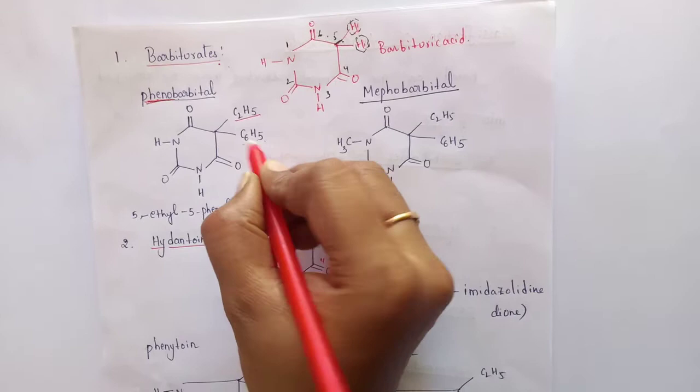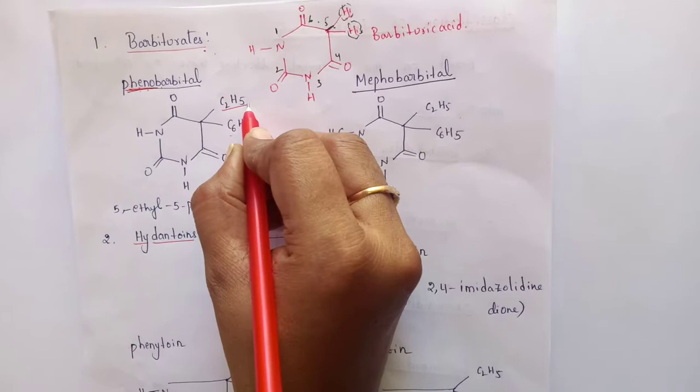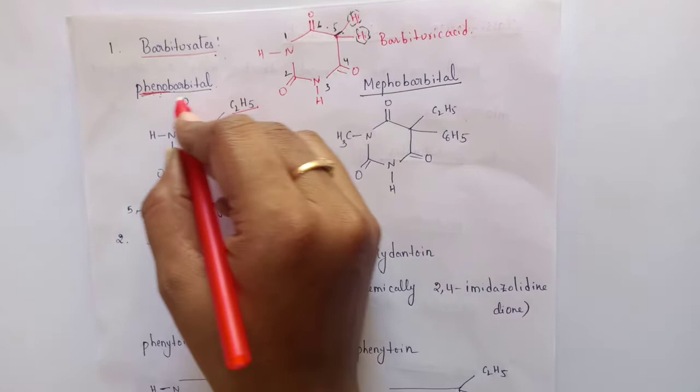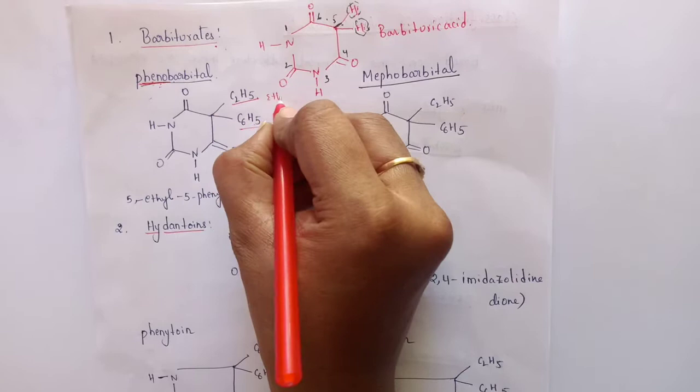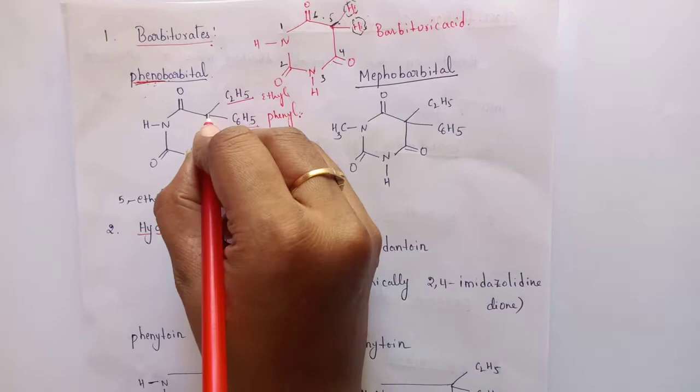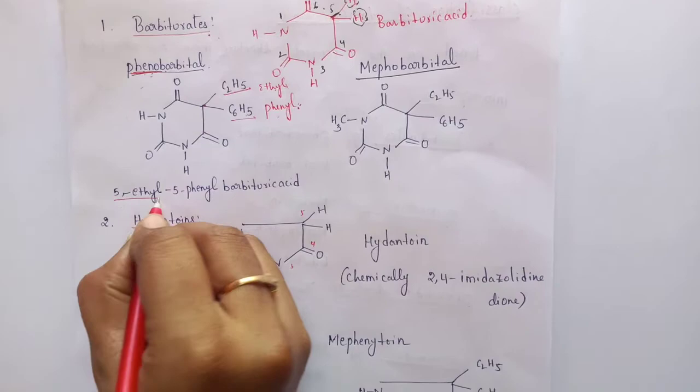In the case of phenobarbitone, at the 5th position one substituent must be ethyl and another one is phenyl. That is why we name it phenobarbitone. For the IUPAC name of this molecule, since it is barbituric acid substituted at the 5th position with ethyl and phenyl, following alphabetical order, we name it 5-ethyl-5-phenyl-barbituric acid.